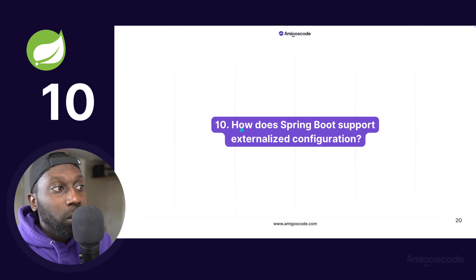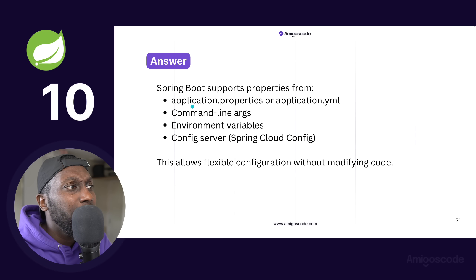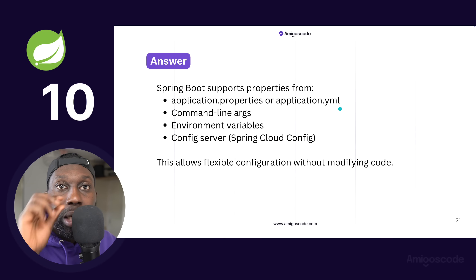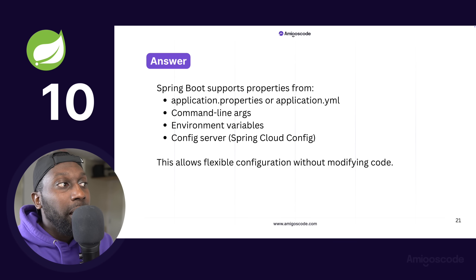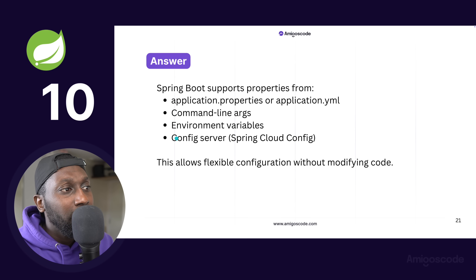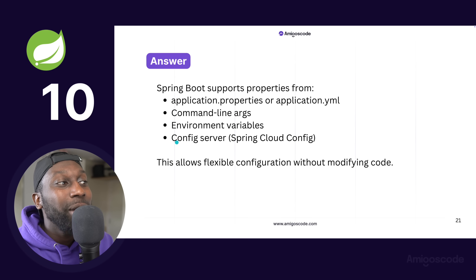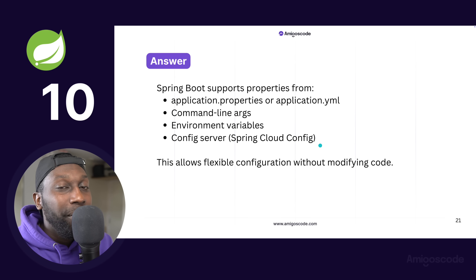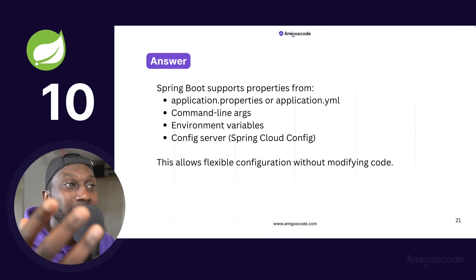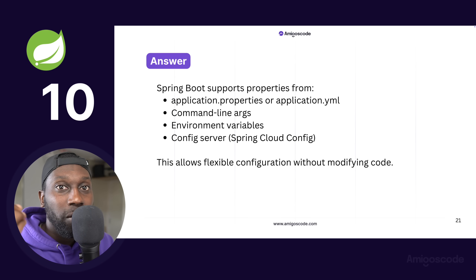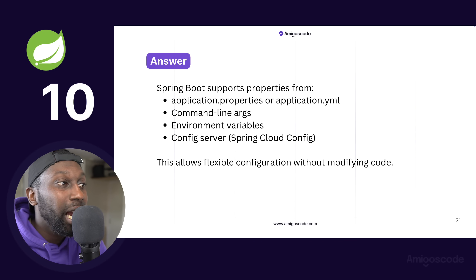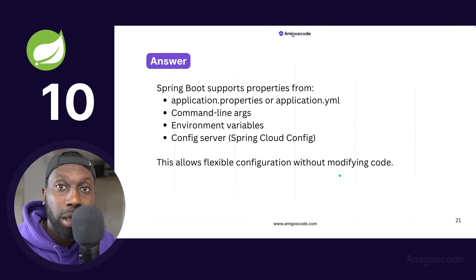Finally, how does Spring Boot support externalized configuration? There are a few ways: using application.properties or YAML depending on your team's preference, overriding with command-line arguments, or using environment variables. There's also Config Server, but you don't necessarily need it — it's an extra server to manage. For large enterprises with thousands of microservices, there are better approaches. The key benefit is flexible configuration without modifying your code.